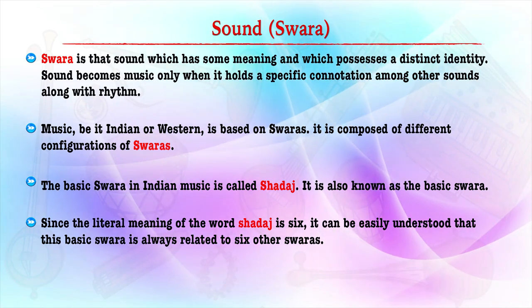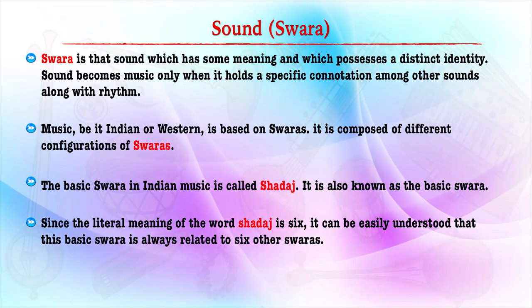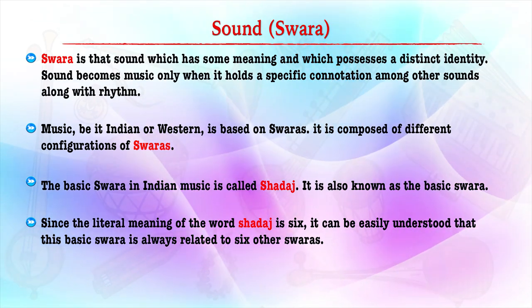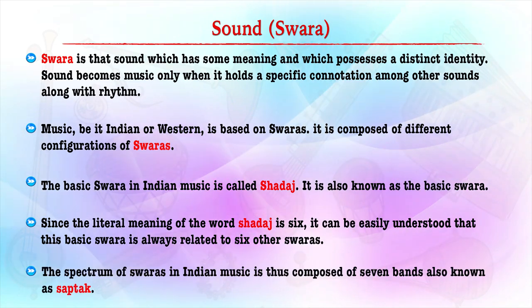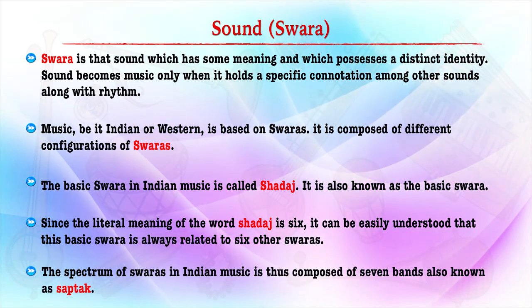The basic swara in Indian music is called Shadaj. Since the literary meaning of the word Shadaj relates to six, the basic swara is always related to six other swaras. The spectrum of swara in Indian music is composed of seven bands known as saptak. In Indian music, the swaras are not related to a fixed pitch, unlike Western music. It is the musician who defines the pitch of the Shadaj, and accordingly the other six swaras get located on the musical spectrum. Western music, however, focuses on the concept of absolute pitch — specific pitch for specific swaras — and musical instruments were created according to this fixed pitch.